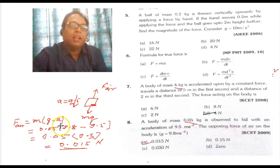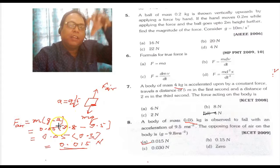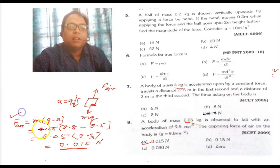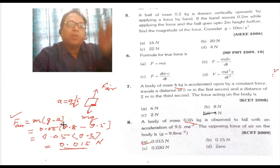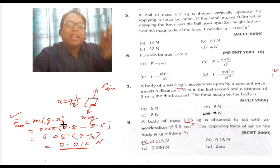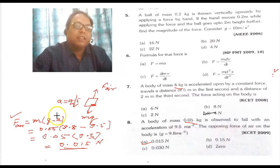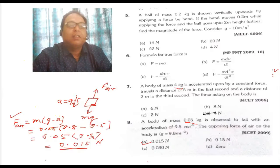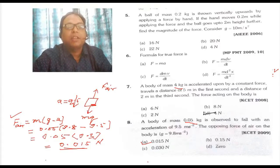Key point to remember: if the body is falling downward with acceleration a, apply F = m(g - a). If the body is moving upward with acceleration a, then apply F = m(g + a). That's question number 8.